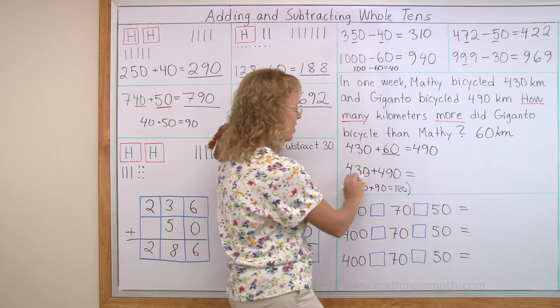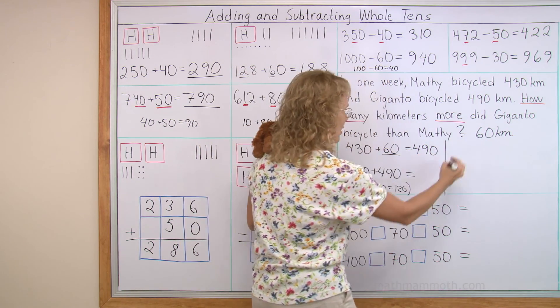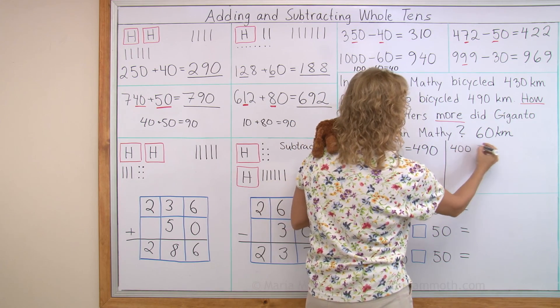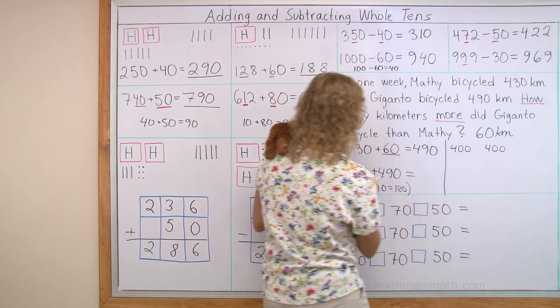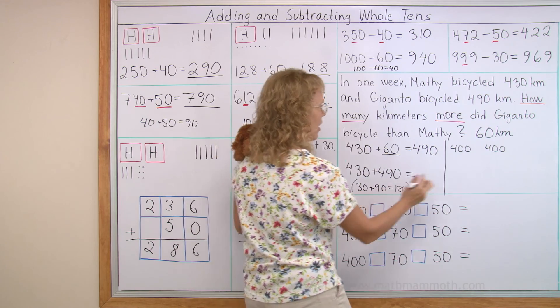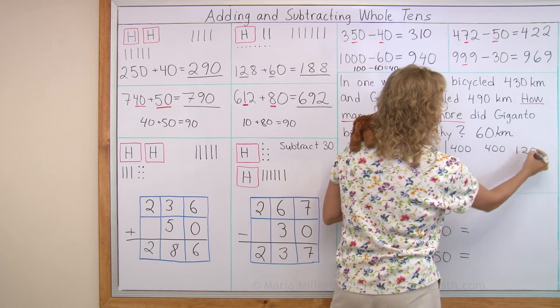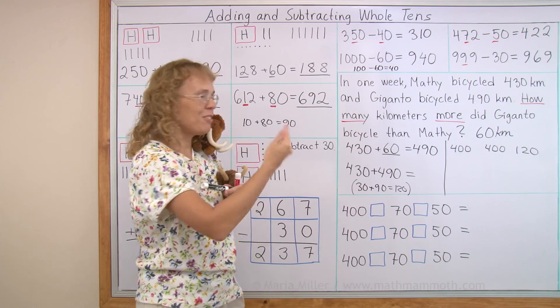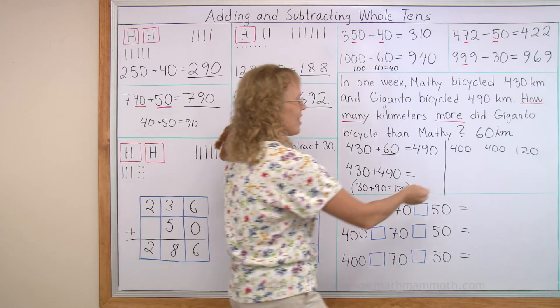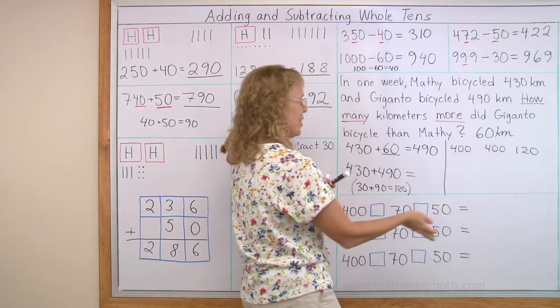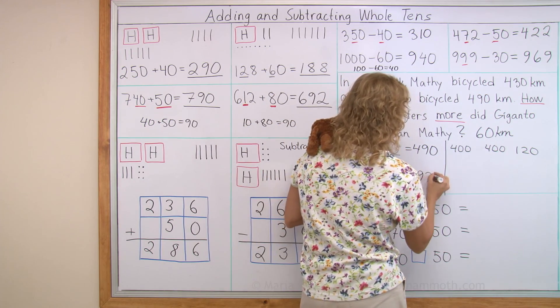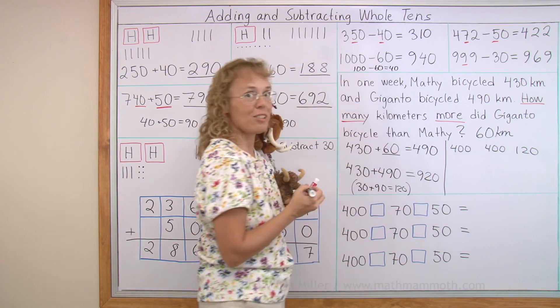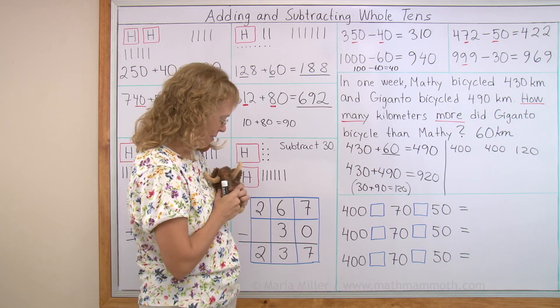So, I get 400. Let's think about it here. I have 400 and 400. And then I have 30 and 90, which made 120. Could you add those three numbers? 400 and 400. 800. And then 100 more is 900 and then 20. 920 kilometers. Wow. Almost 1,000 kilometers together. All right. Thank you, Giganto.